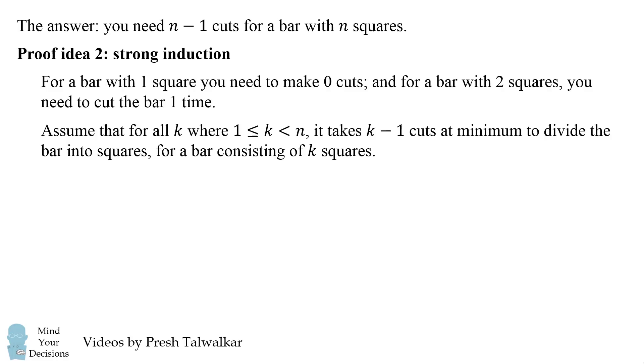Now we will assume for all whole numbers k, where k is greater than or equal to one but less than n, that it takes k minus one cuts at minimum to divide the bar into squares for a bar consisting of k squares.